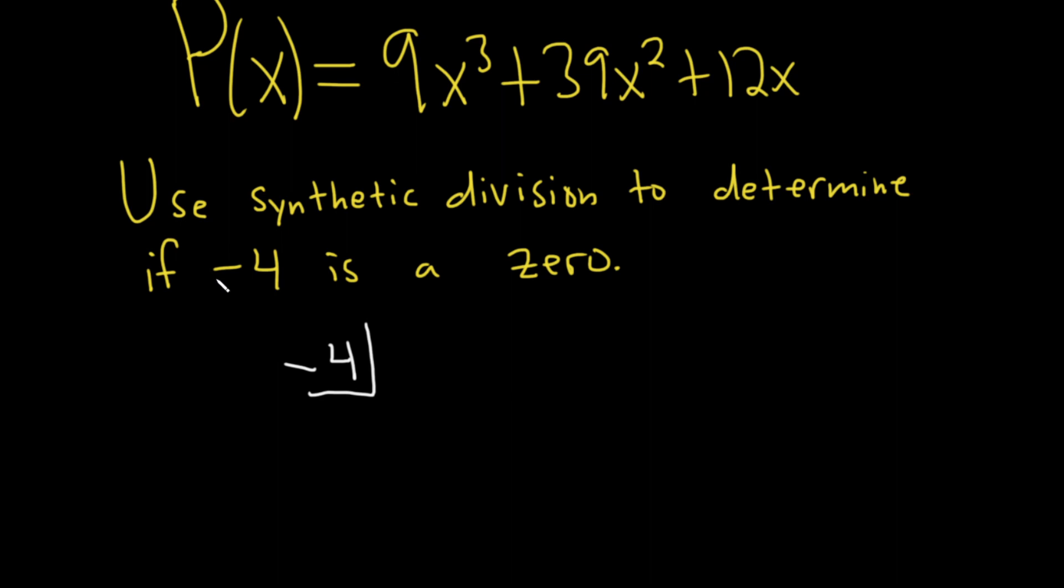So to do that, you just take this, put it here, and then you write down the coefficients 9, 39, and 12.